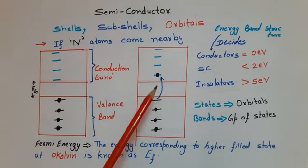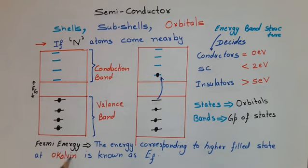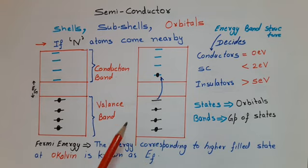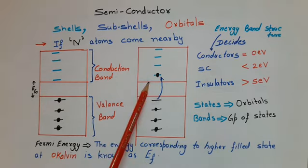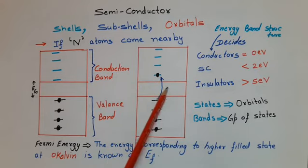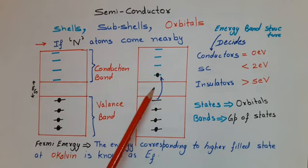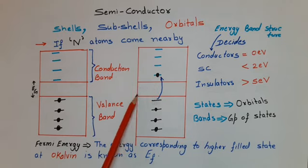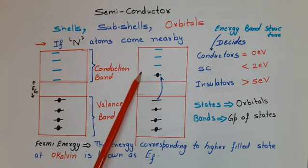We should also remember that the energy corresponding to the highest filled state at 0 Kelvin is known as the Fermi energy level, denoted by EF. In case of an intrinsic semiconductor, the Fermi energy level lies in between the conduction band and valence band. But in case of an extrinsic semiconductor, if it is P-type the Fermi level lies near the valence band, and if it is N-type it lies closer to the conduction band.